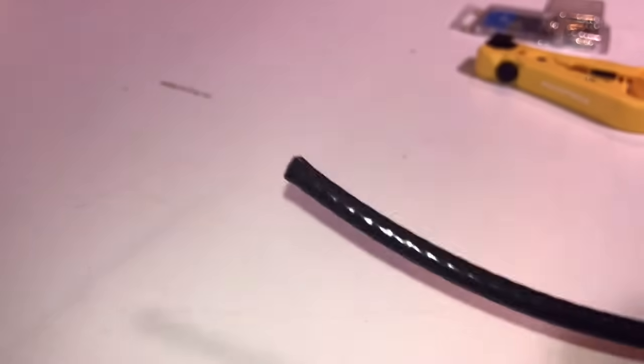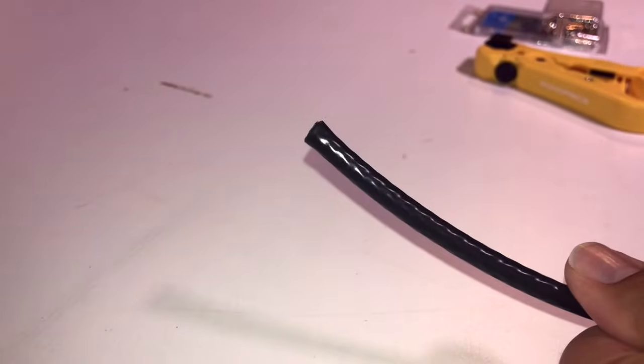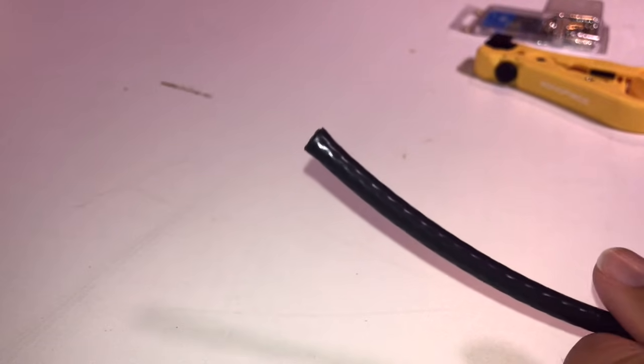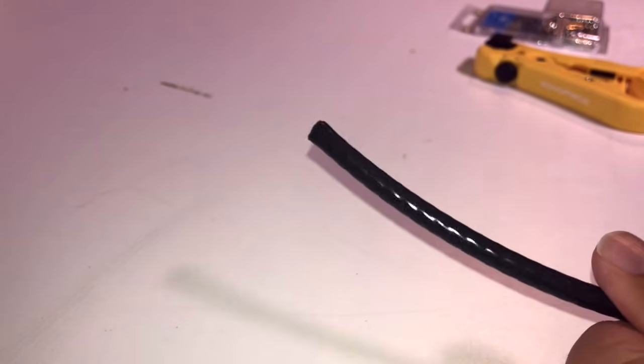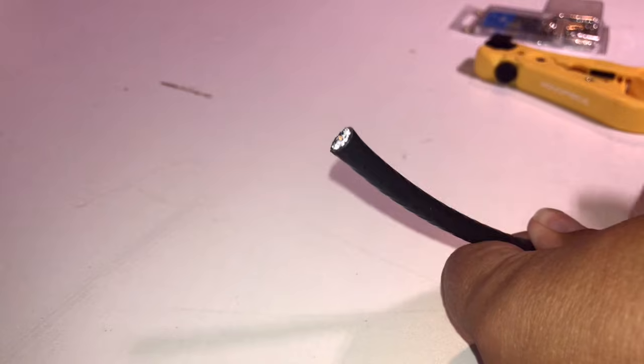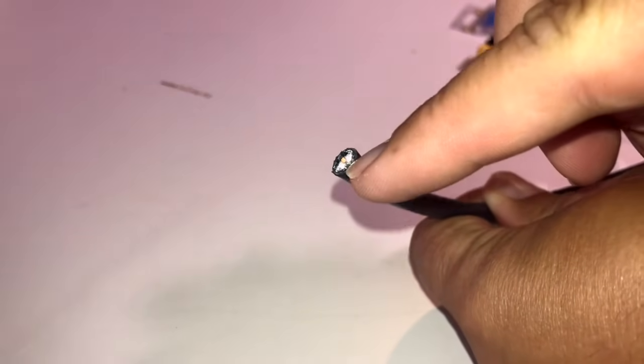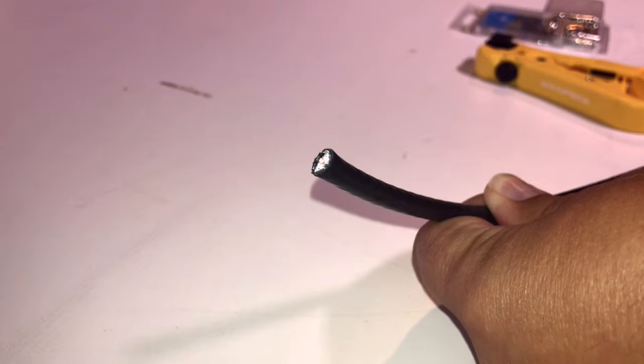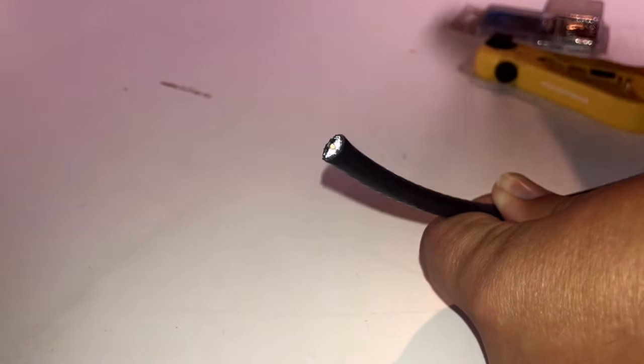Alright, let's take a look at how to make an end for a coax cable. Coax cable is typically what's used for cable TV or something like that. It's usually got a little pin in the center. But what we're going to do is we're going to put an end on the coax cable.